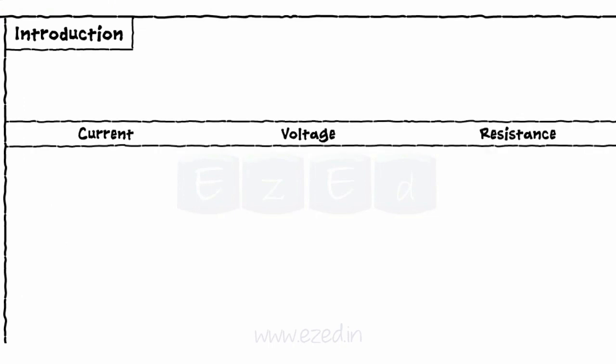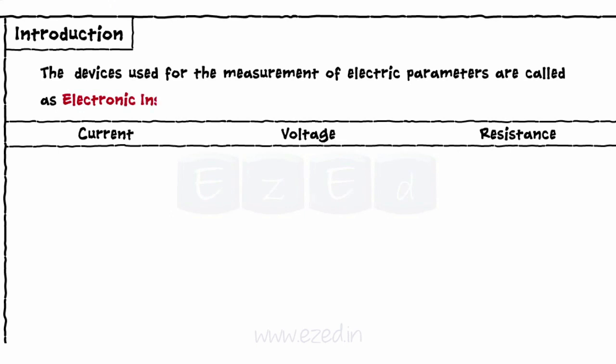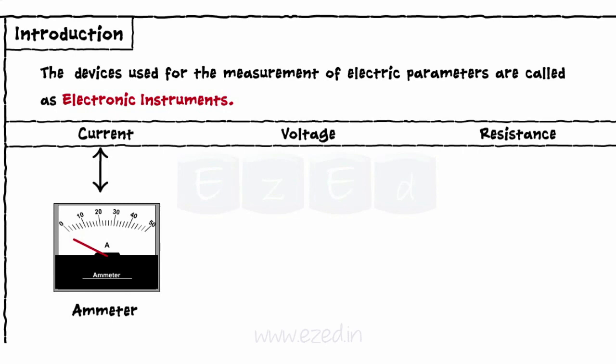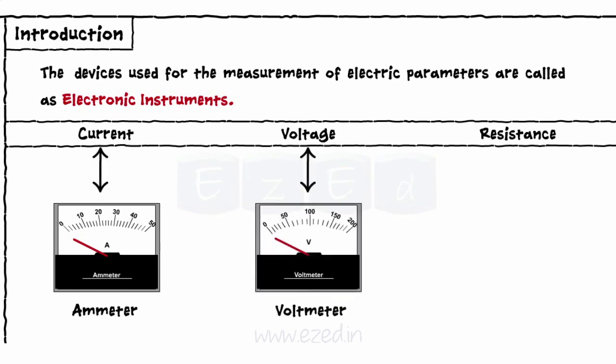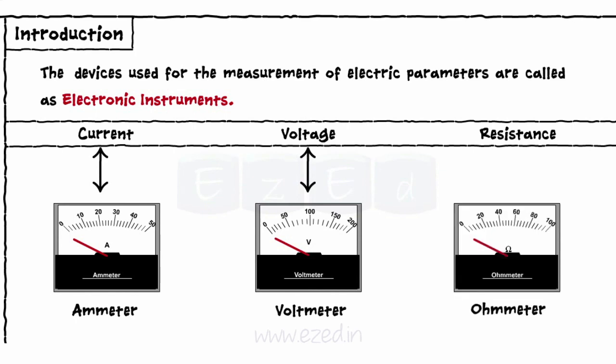We will start with the introduction. In the analysis of any circuit, the terms current, voltage, and resistance are very commonly used. There are certain devices used for the measurement of these parameters. These devices are called electronic instruments. We use an ammeter to measure current, a voltmeter to measure voltage, and an ohmmeter to measure resistance.